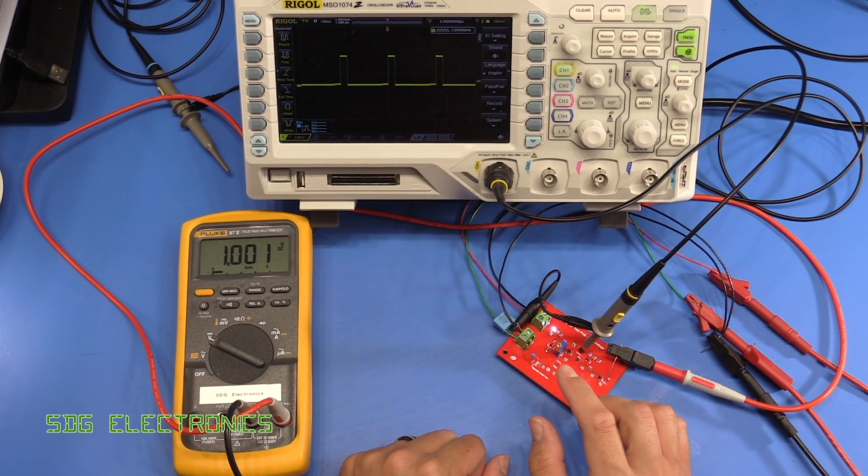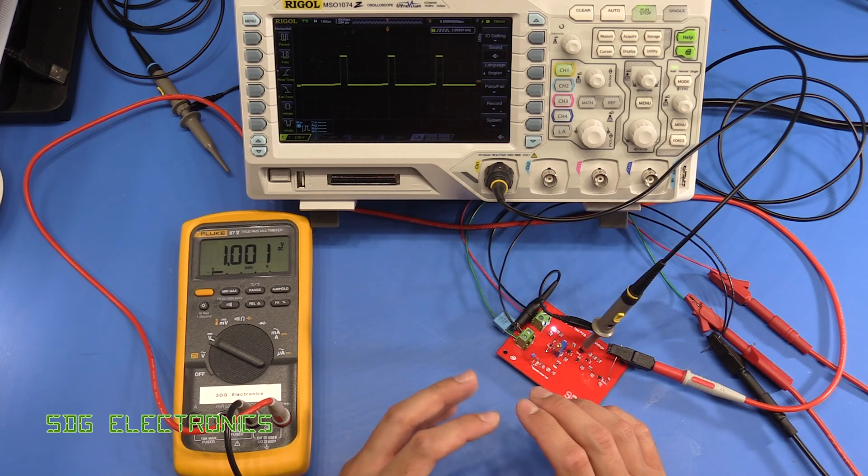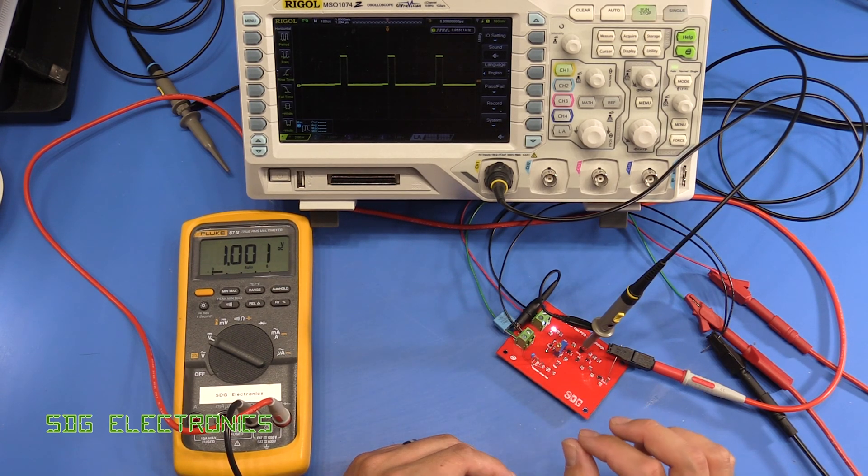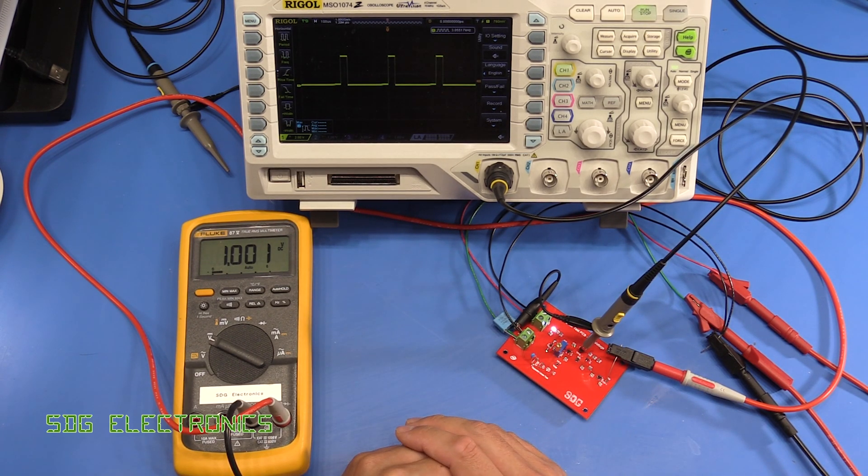In this video we're going to be taking a look at ceramic capacitors and why once you've deployed them in your circuit, the capacitance value of those capacitors might not be what was specified in the datasheet.